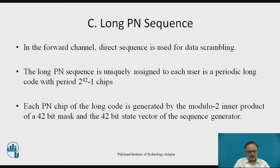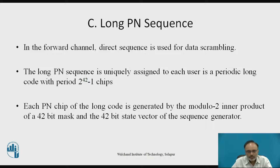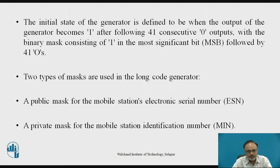In the forward channel, a long PN sequence is used as a direct sequence for data scrambling. The long PN sequence is assigned to each user as a periodic long code with period 2^42 − 1 chips. Each PN chip of the long code is generated by the modulo-2 inner product of a 42-bit mask and the 42-bit state vector of the sequence generator. The initial state of the generator is defined when the output becomes 1 after 41 consecutive 0 outputs, with the binary mask consisting of 1 in the most significant bit followed by 41 zeros.